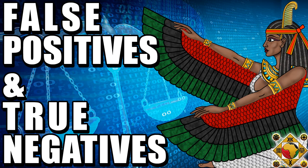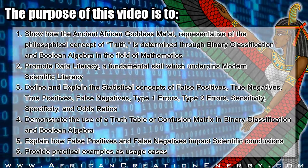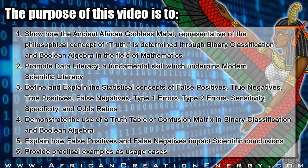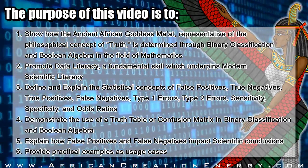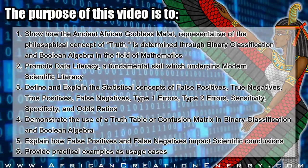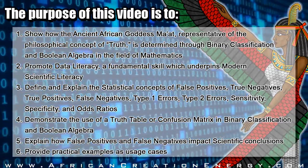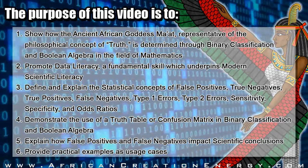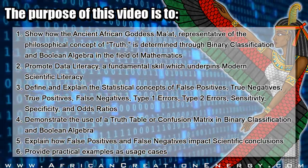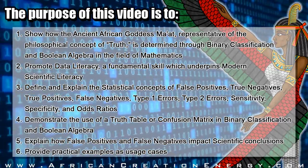False positives and true negatives: binary classification in Ma'at mathematics, or the mathematics of truth. The purpose of this video is to: one, show how the ancient African goddess Ma'at, representative of the philosophical concept of truth, is determined through binary classification in boolean algebra; two, promote data literacy, a fundamental skill which underpins modern scientific literacy; three, define and explain the statistical concepts of false positives, true negatives, true positives, false negatives, type 1 errors, type 2 errors, sensitivity, specificity, and odds ratio; four, demonstrate the use of a truth table or confusion matrix in binary classification in boolean algebra; five, explain how false positives and false negatives impact scientific conclusions; and six, provide practical examples and use cases.